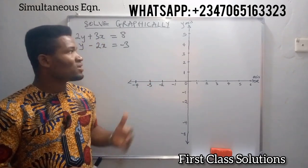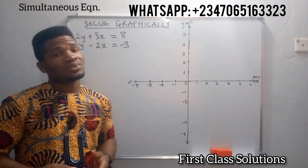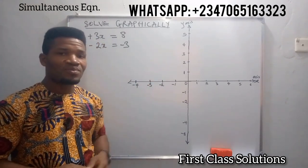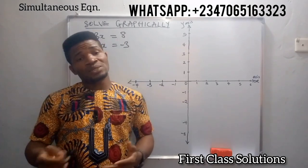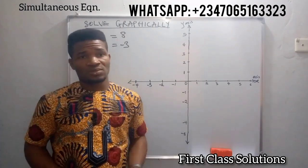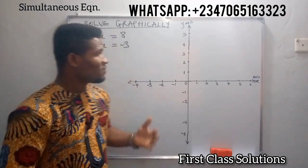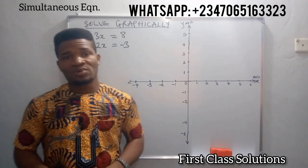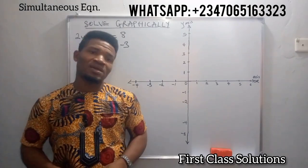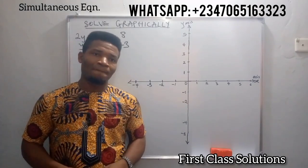Solving them simultaneously, we can do that using the graphical method. We can also do that using elimination. We can as well substitute the values of x and y to get each of them individually before getting the next subsequently.